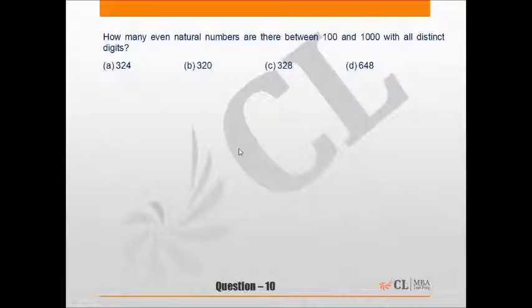In this problem, we have to find how many even natural numbers are there between 100 and 1000 with all distinct digits. Basically, we have to find all three-digit even natural numbers that have distinct digits. For a number to be even, its last digit has to be divisible by 2.